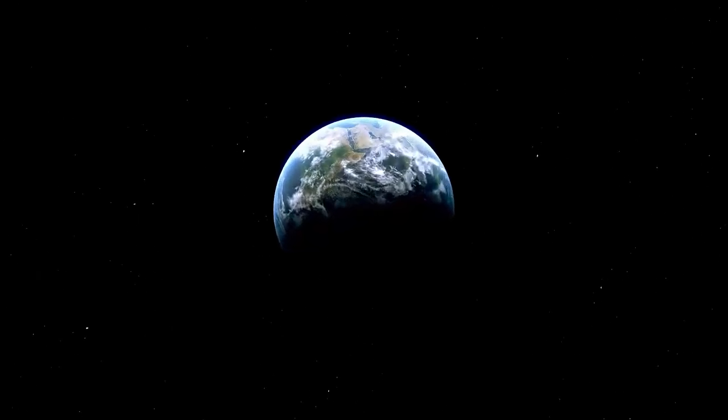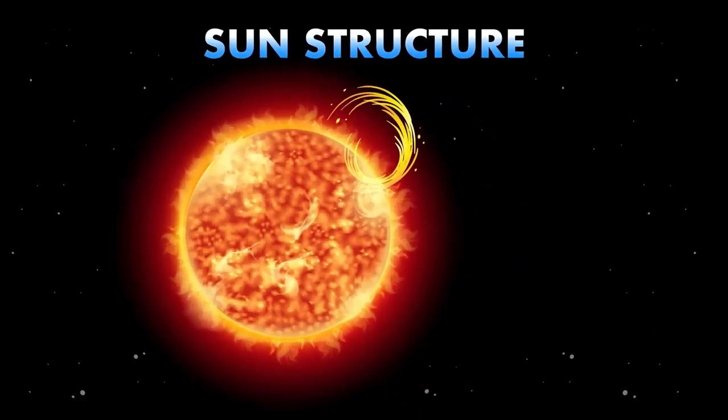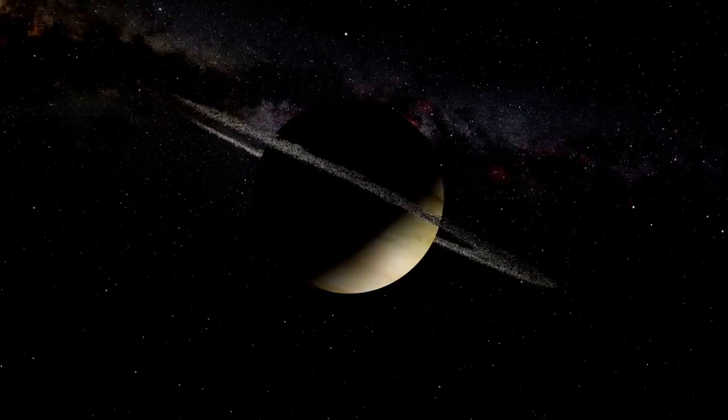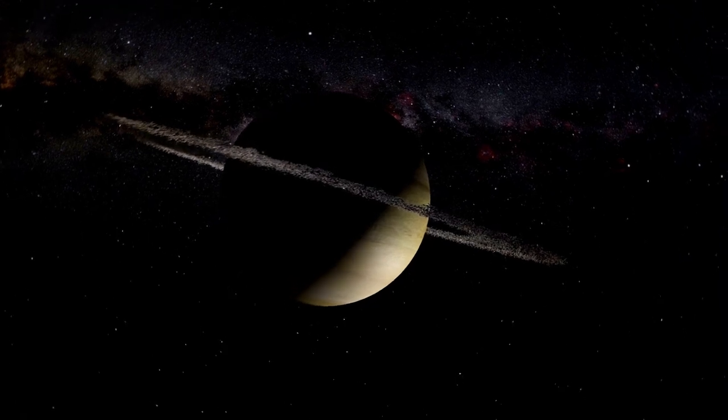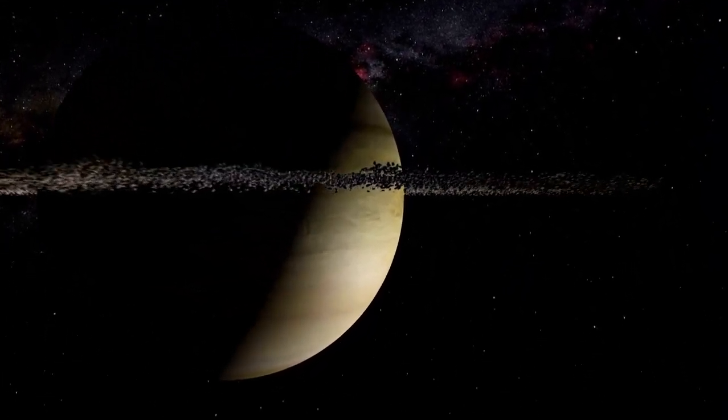Proxima Centauri b is not alone in its journey around the red dwarf star. It has a fellow traveler, the super-Earth Proxima Centauri c. And who knows what other secrets this star system holds, perhaps another companion that we have yet to discover.